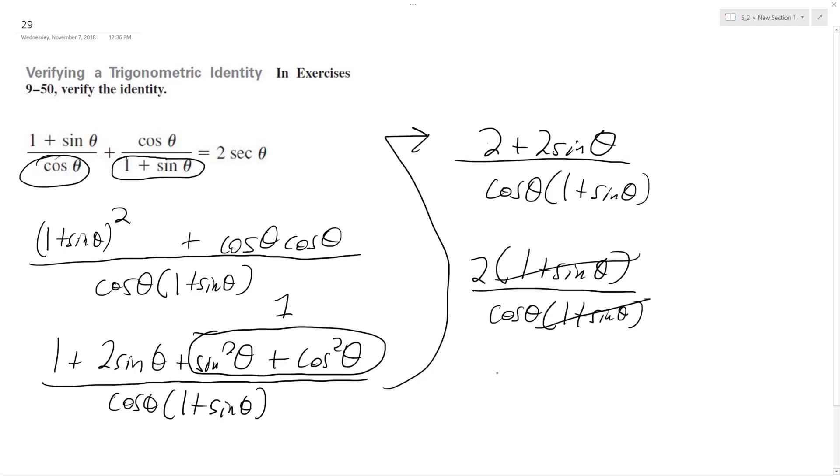I can cancel these out. I get 2 over cosine theta. And 1 over cosine theta is the same thing as secant theta.